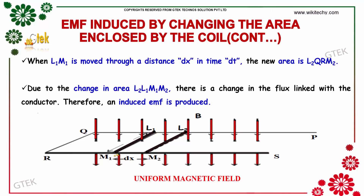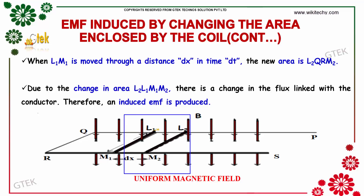When L1 and M1 is moved through a distance dx in time dt, the new area L1, L2, M1, and M2 is formed. Apart from that, a new area of L2, Q, R, M2 is created. Due to the change in the area L1, L2, M1, and M2, a flux is created in this conductor and an induced EMF is produced.